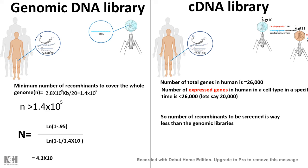The number of recombinants to screen is much less in a cDNA library, because at a given point in time fewer genes are expressed than the total gene count. For example, if 20,000 genes are expressed out of 26,000 total human genes, the number of recombinants to screen is far smaller. So in simple terms, a cDNA library is easier to handle, screen, and manage, whereas the genomic DNA library is vast and difficult to manage.